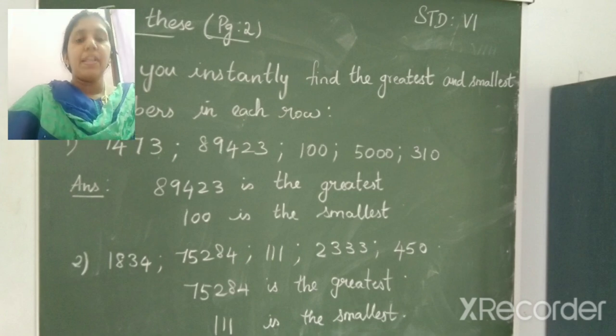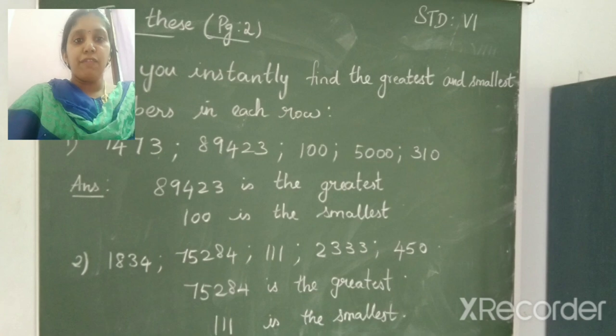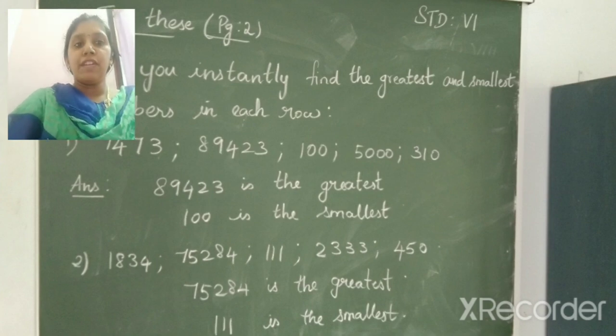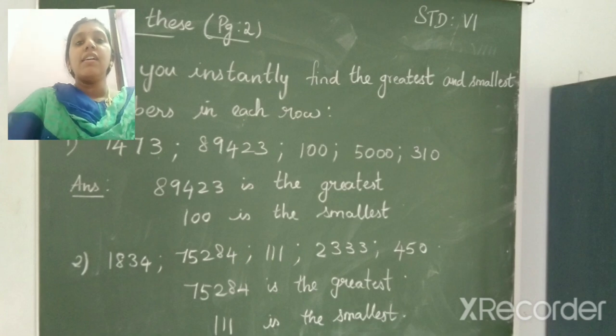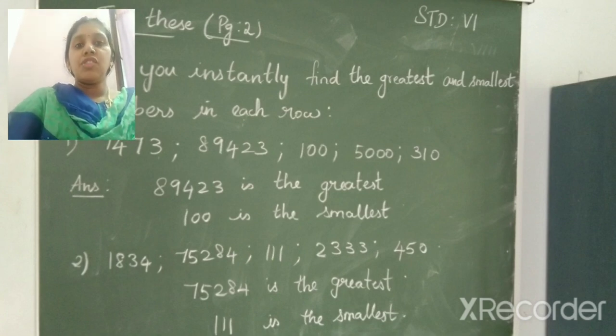Moving on to next sum, 1,834, 75,284, 111, 2,333, 450. Here we have 3 digit number, 4 digit number and 5 digit numbers. So which is the greatest 5 digit number? So 75,284 is the greatest number.